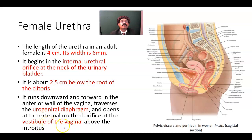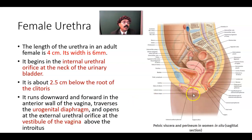The vestibule of the vagina is the space between the two labia minora. It is within this vestibule that the female urethra opens. The labia minora are visible on either side of the vestibule.